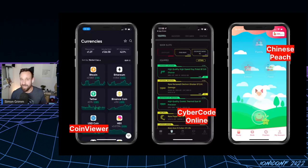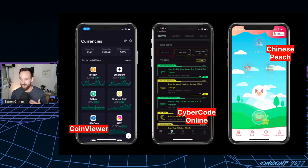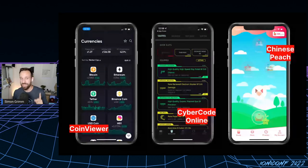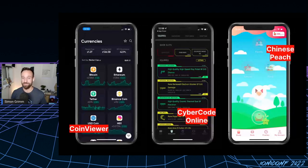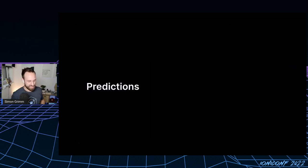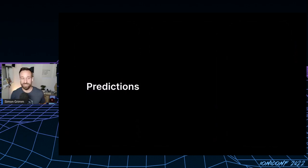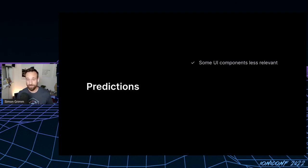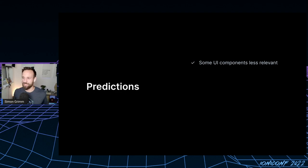And it's not just examples I came up with — there are many great Ionic applications in the wild. I've done a lot of Ionic app reviews on YouTube and seen cool applications like a coin viewer, Cyber Code Online (I actually played that for about a week), and the Chinese Peach application. There are so many great Ionic apps on the App Store and you most likely don't even know they're made with Ionic. Now let me throw some predictions out there — we can talk about this next year.